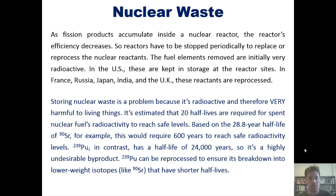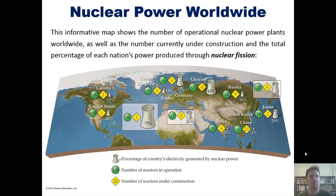With that in mind, I'm now going to show you an informative map. This map shows the number of operational nuclear power plants worldwide, as well as the number currently under construction and the total percentage of each nation's power produced through nuclear fission. Of course, it's out of date since this is a recording. But you're welcome to pause this video and take a closer look to see if you can glean anything interesting.